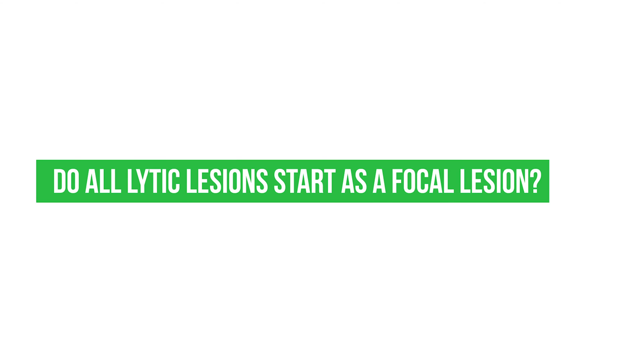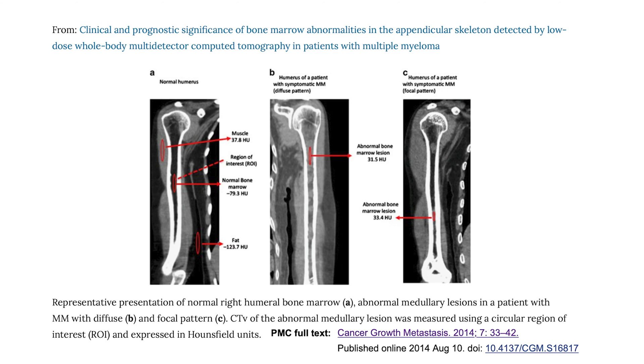Do all lytic lesions start as a focal lesion? The way to think about it is when myeloma cells are active, they don't like to leave the bone marrow. They tend to like that environment, and so they start dividing and taking over the bone marrow. Occasionally they start making nests of cells that in other cancers we call tumors — here we call lesions — and they're inside the bone marrow.